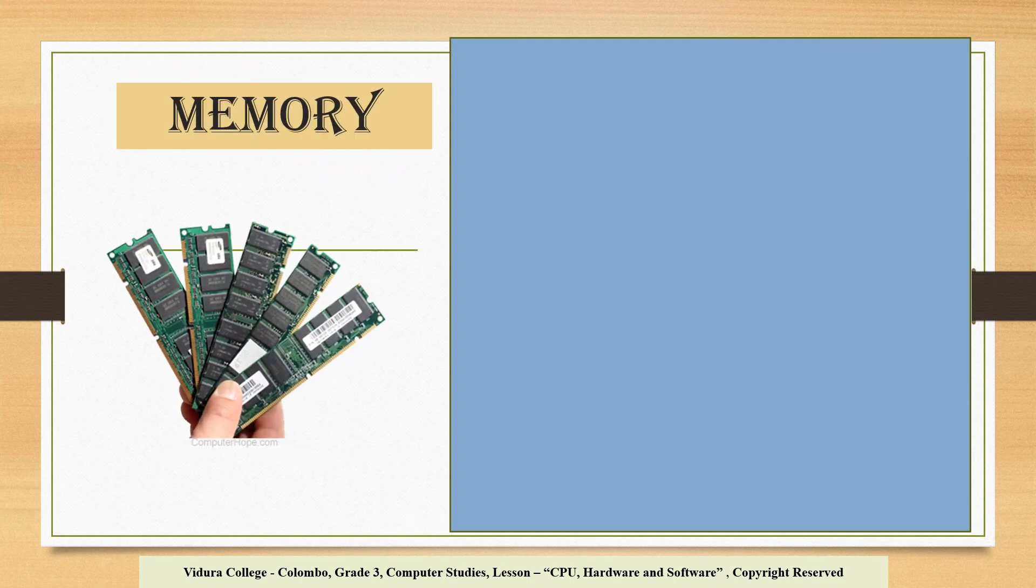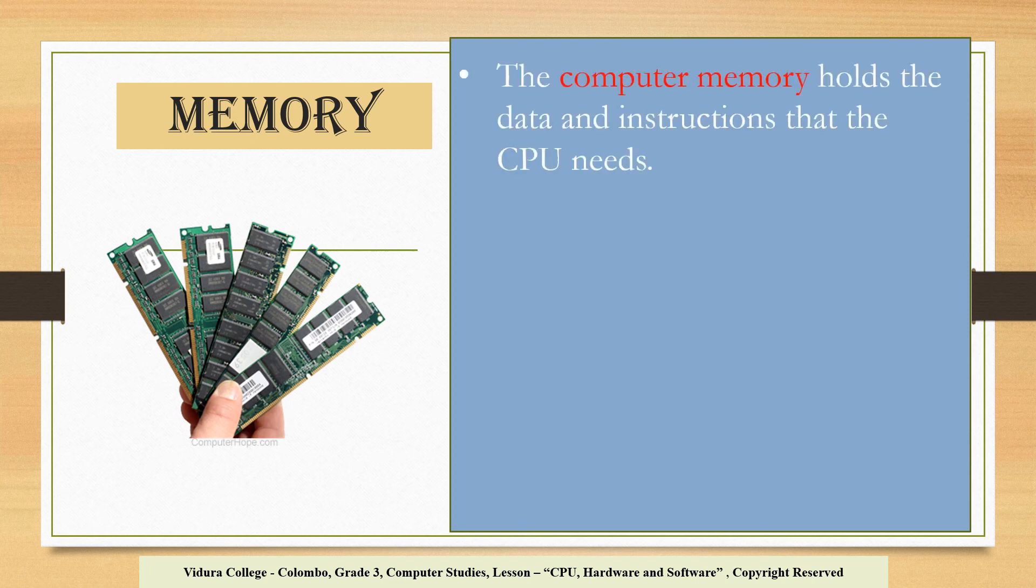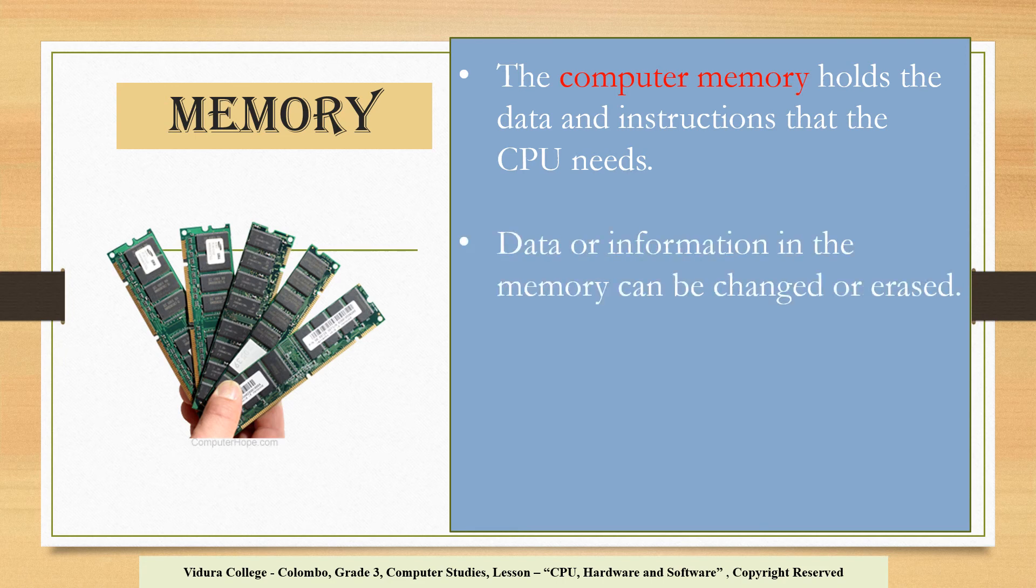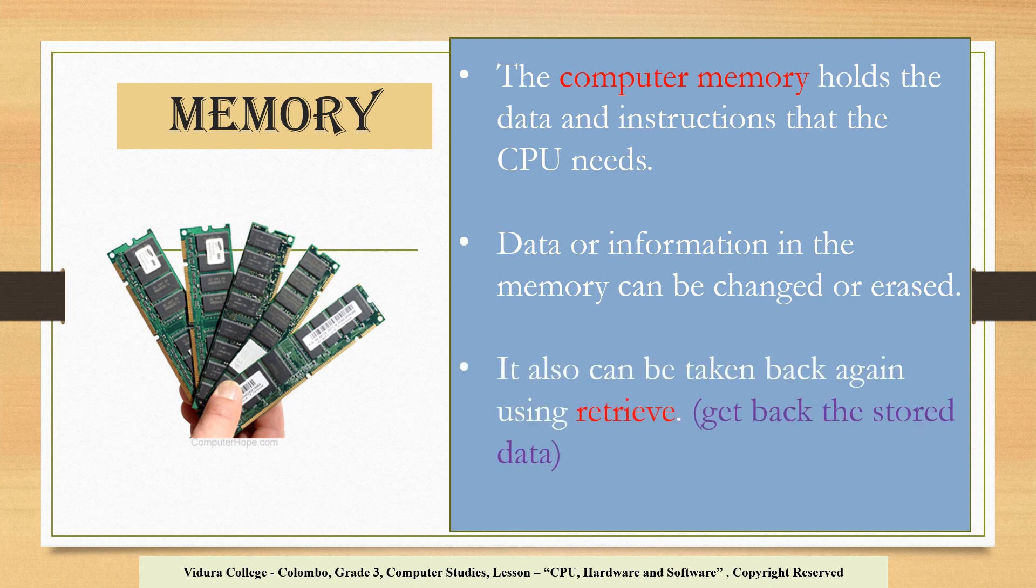Look at this picture. Now, we will learn about the memory unit. It holds the data and instructions that the CPU needs. This data or information can be changed or erased. If you want, you can take back this stored data and information. This is the temporary storage area.